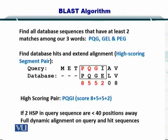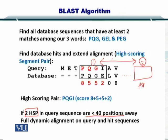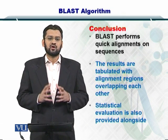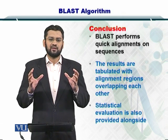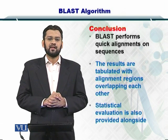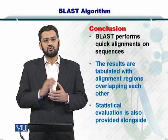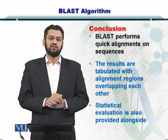If you have two HSPs within the database — this was one, and at some other position you get another HSP — and if the distance between them is less than 40 amino acids, then you perform full dynamic alignment on the query and hit sequences. This means we compute the full alignment because this is probably a very good match. In this way, BLAST reduces computational cost by only performing full alignments for closely located HSPs.